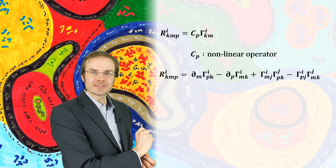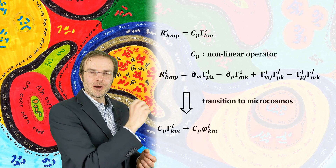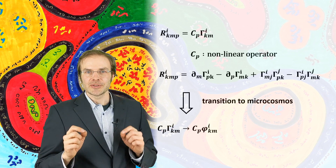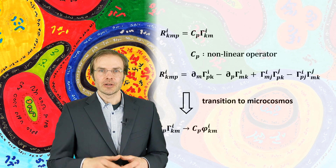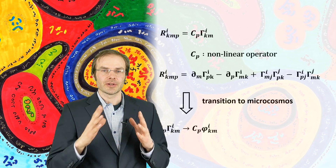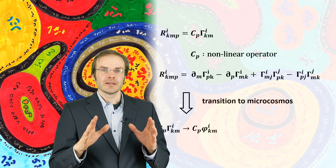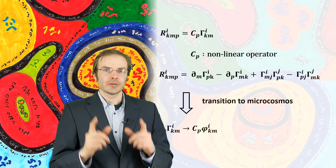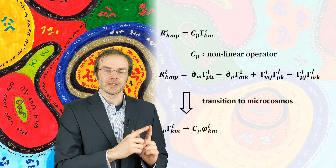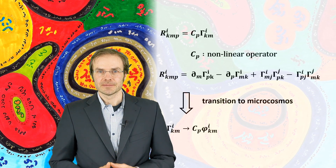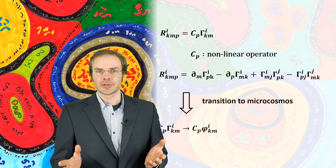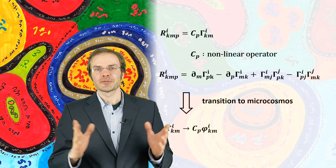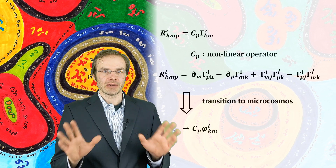This relation must also persist in the microcosmos, and therefore Cp applied on phi must have the same structure. I'm not using the usual Greek indices here because they specifically apply to the conventions of relativity where they are four-dimensional and index zero applies to the time dimension. We do not want to associate our formalism with that, so I'm using Latin index letters just as Heim did. The Christoffel symbols become the phi symbols in the microcosmos, but the difference is the phi symbols do have tensor properties while the Christoffel symbols do not.